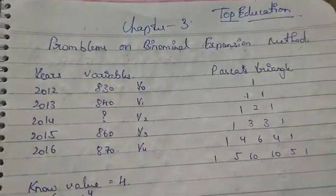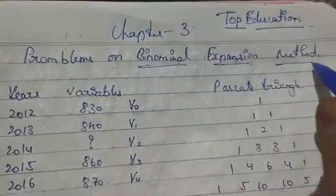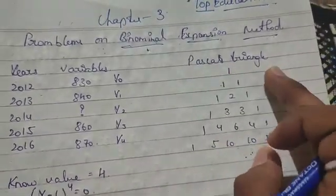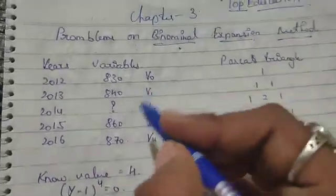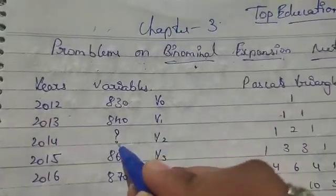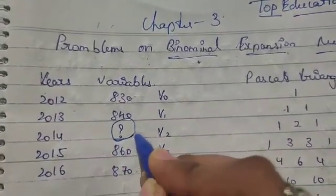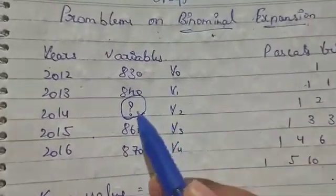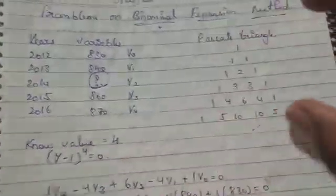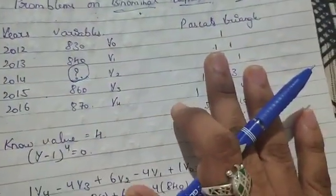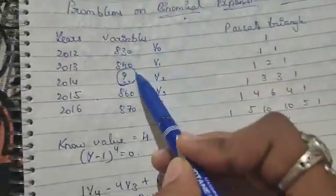In problems on binomial expansion method, when you see this method you have to prepare Pascal's triangle — also called Parker's triangle. When a question mark is given in the question, you should think to use this triangle. This can come for six marks or fourteen marks. For fourteen marks you will have two question marks; for six marks you will have one question mark.